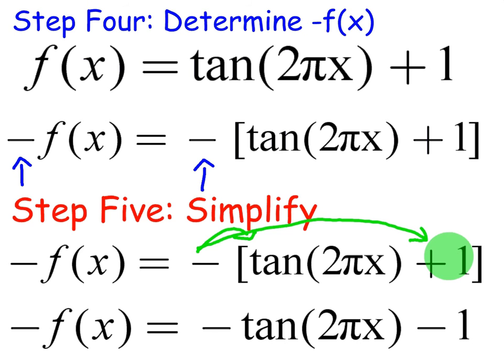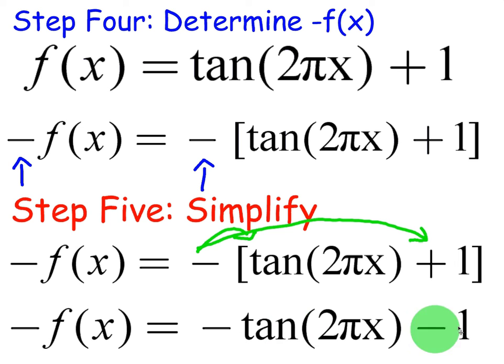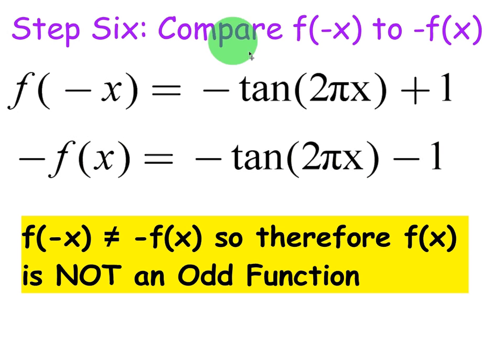So negative f of x is equal to negative tangent of 2 pi x minus 1. That negative ends up being distributed, whereas before when we plugged in negative x, it did not affect the plus 1. So you can already see that there is a difference between f of negative x and negative f of x. And that difference lies in the minus 1 and plus 1. So for step 6, to compare f of negative x to negative f of x, they are not the same thing exactly.